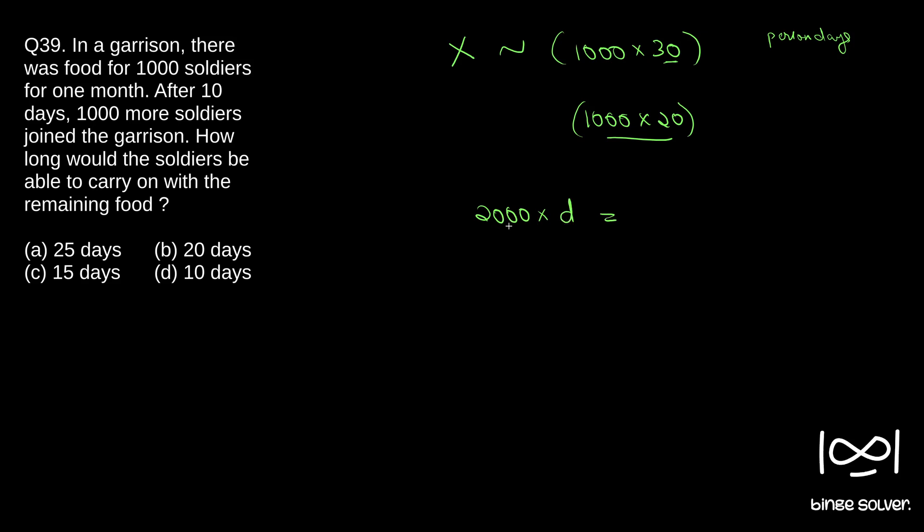So how many days will be there left is the question. We know that after 10 days, 1000 × 20 is the amount of food that is left. So D becomes 20 divided by 2, which is 10. So the answer is 10 more days these 2000 people can feed. D is the correct answer, 10 days. This is the solution to question 39.